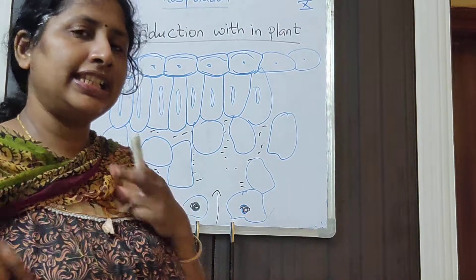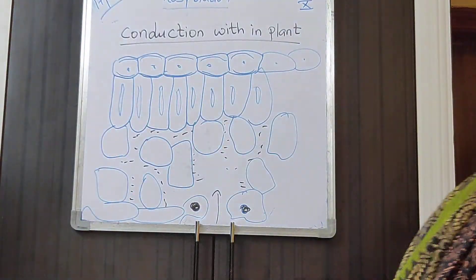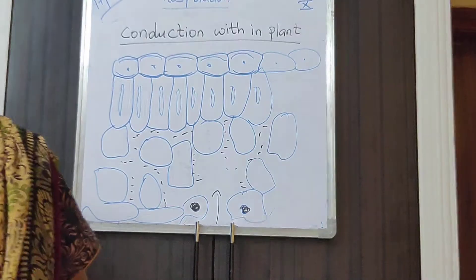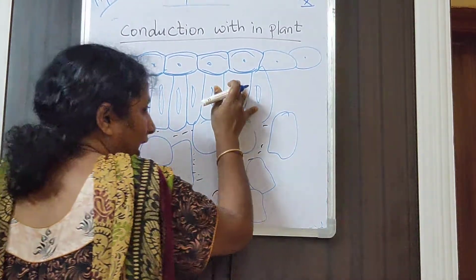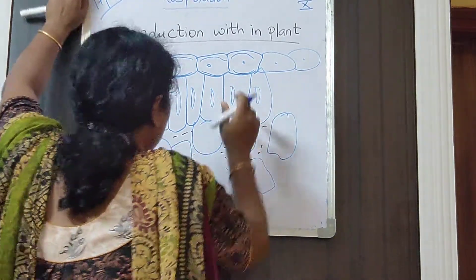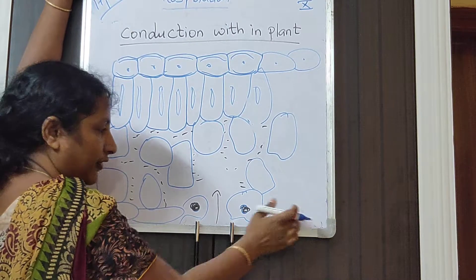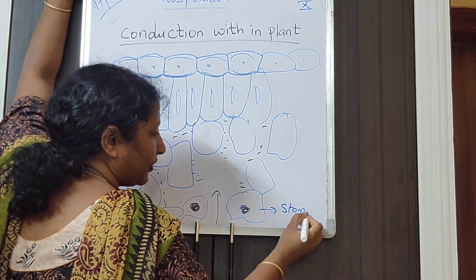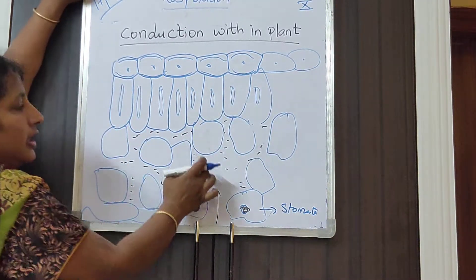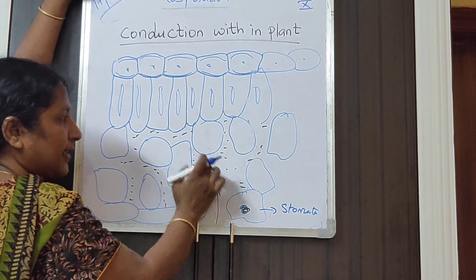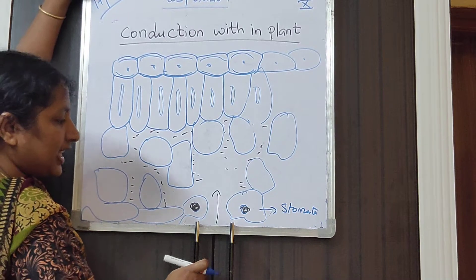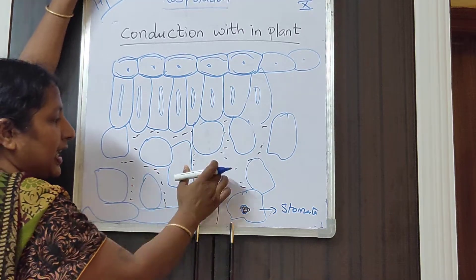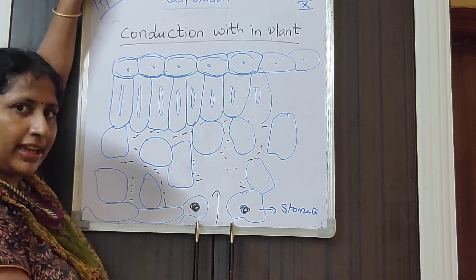This air gets dissolved in the water. From the atmosphere outside, the air enters through the stomata, which leads to the cells. Inside, between the cells, there are spaces, and these spaces are occupied by air.